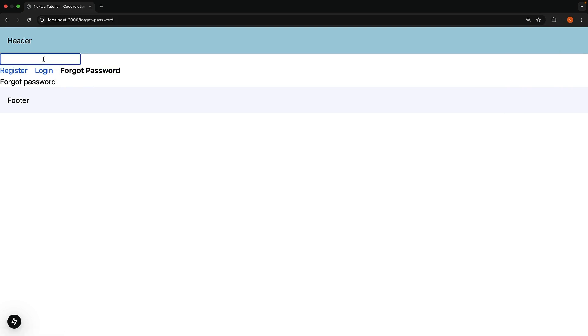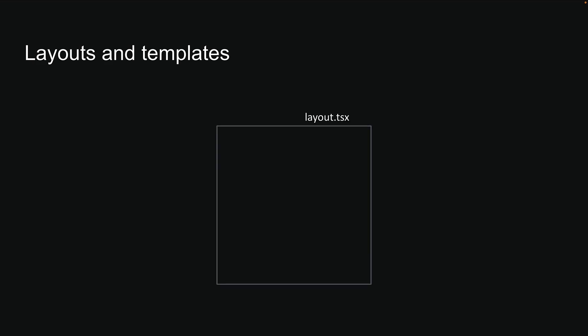This is the significance of the template file in the app router. It is worth mentioning that you can actually use both layout.tsx and template.tsx files together. In this case, the layout renders first and then its children are replaced by the template component's output. Templates are not a common requirement and layouts should be your go-to for shared UI. However, if a need does arise for you to use templates, you now understand how to use them.